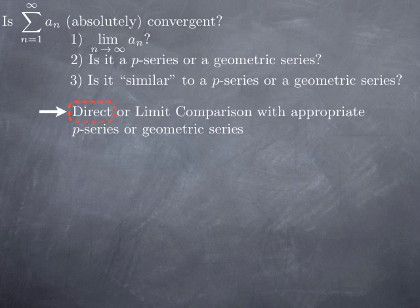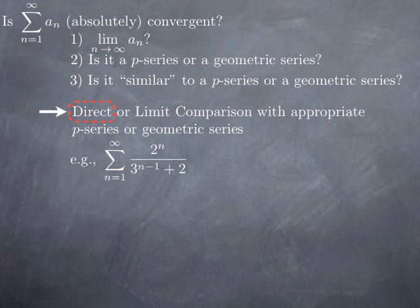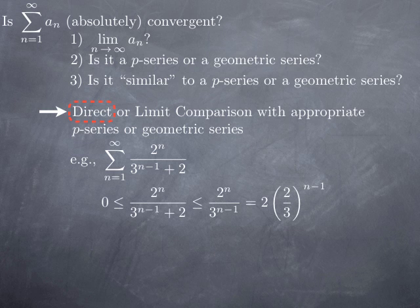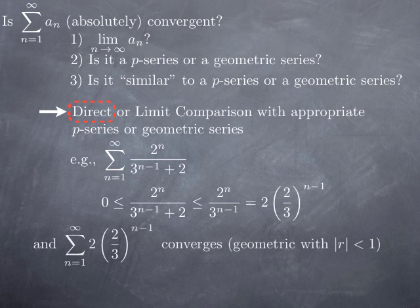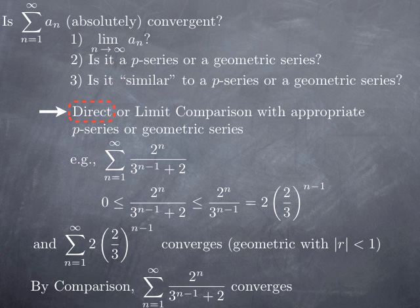For an example of direct comparison, consider the series with general term 2^n divided by (3^(n−1) + 2). The key observation is that dividing by 3^(n−1) + 2 means dividing by something greater than 3^(n−1), so you get something smaller. The general term is non-negative and bounded above by 2^n / 3^(n−1), which is the general term of a geometric series with common ratio 2/3. This geometric series converges because |2/3| < 1, and therefore by direct comparison the original series is convergent.